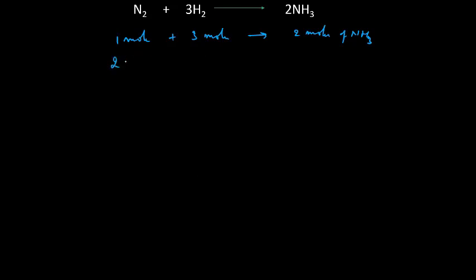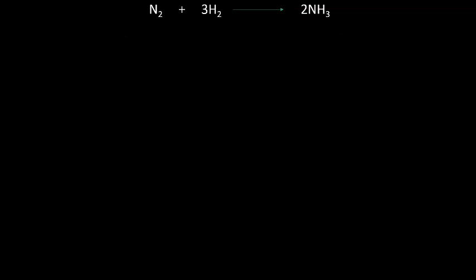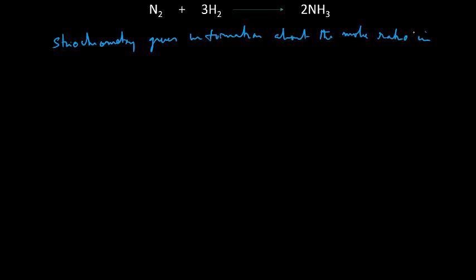So: one mole plus three moles gives two moles of ammonia, where one mole means 6.02×10²³ particles — Avogadro's number. Two moles of nitrogen combined with six moles of hydrogen give four moles of ammonia. Stoichiometry gives information about the mole ratio in a chemical reaction — the number of moles of reactants as well as products.